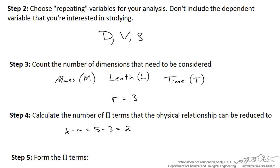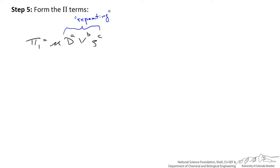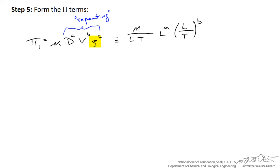The fifth step is to actually form the different pi terms. Pi 1 is equal to one of our non-repeating variables — the viscosity — times diameter to the a power, velocity to the b power, and density to the c power. Our goal is to find exponents a, b, and c such that there are no dimensions for this pi term. The dimensions of viscosity are mass per length·time, diameter is length to the a power, velocity is length per time to the b power, and density is mass per length cubed to the c power. For each dimension we can write an equation.